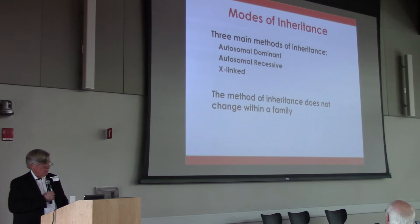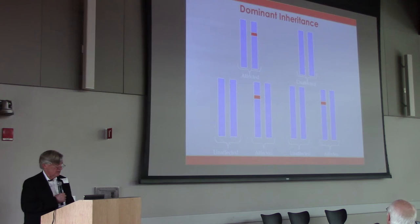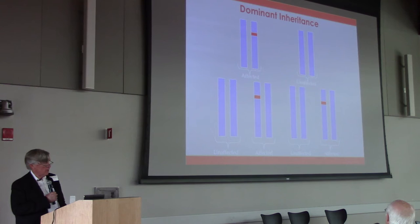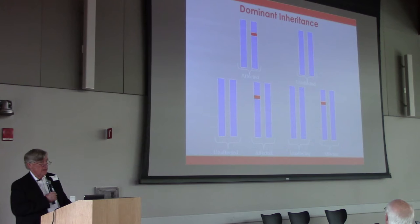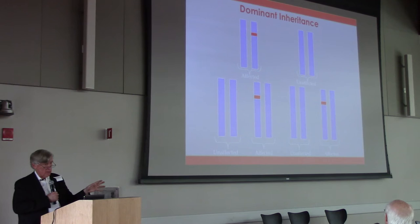There are different ways we can see inheritance in a family, and this is important because we're going to treat it differently. Dominant inheritance means that everybody who gets that genetic change is going to have the neuropathy. This is true for CMT1A — it's a dominant condition, though it can also arise de novo in a family that never had it before.